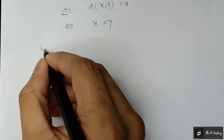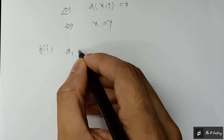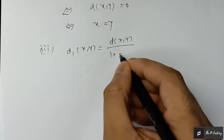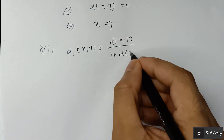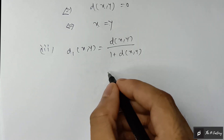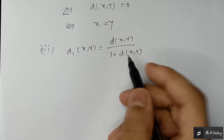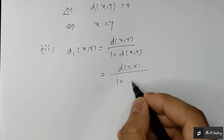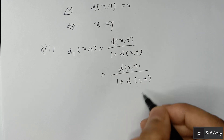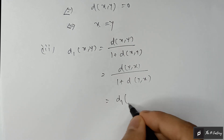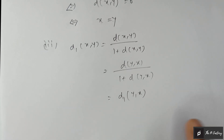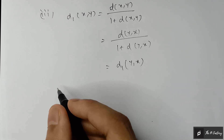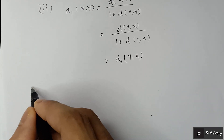For the third condition — symmetry: d₁(x, y) = d(x, y) / (1 + d(x, y)). Since d is a metric space, d(x, y) = d(y, x), so we can write this as d(y, x) / (1 + d(y, x)) = d₁(y, x). Hence the symmetry condition is also fulfilled.